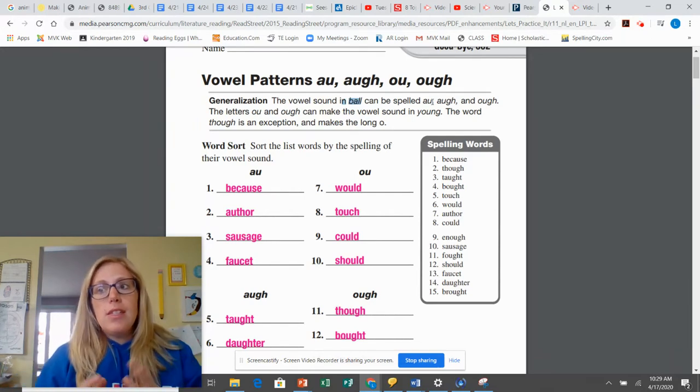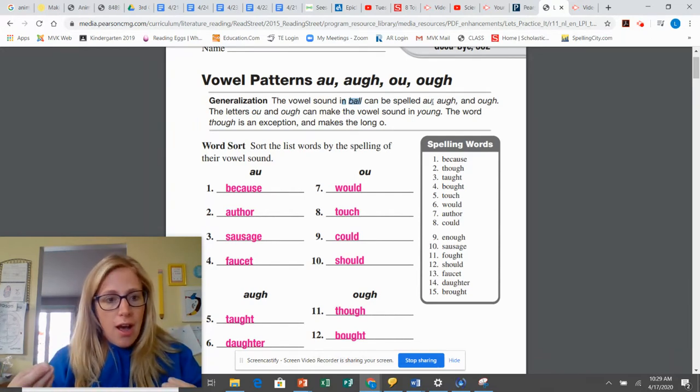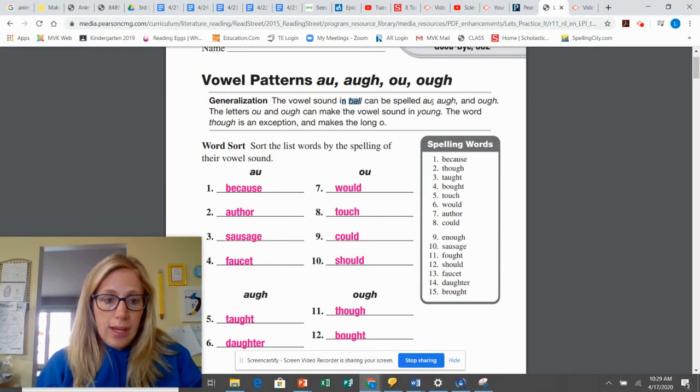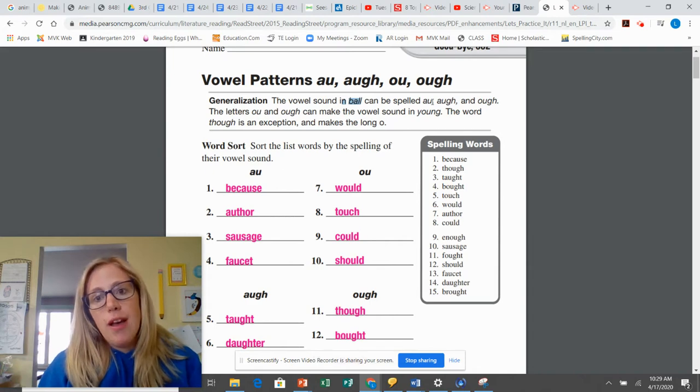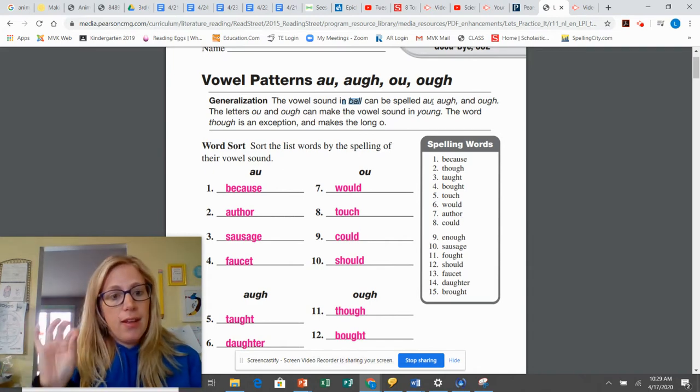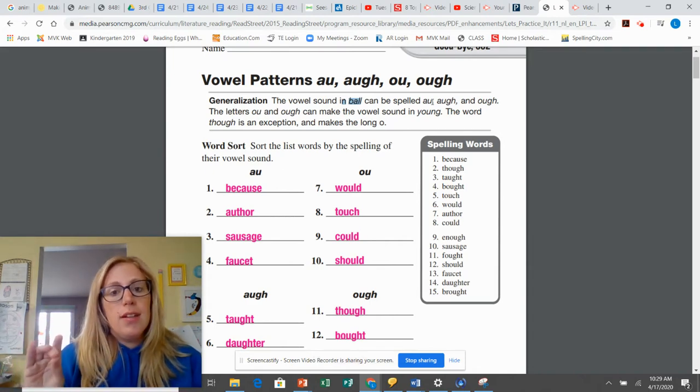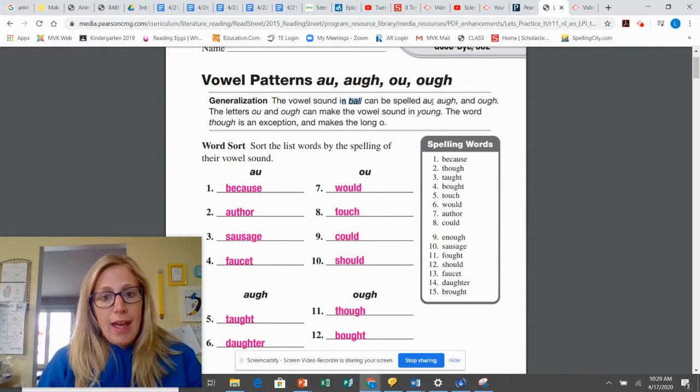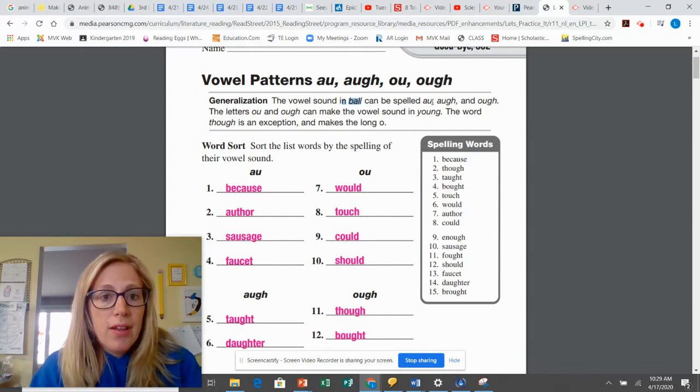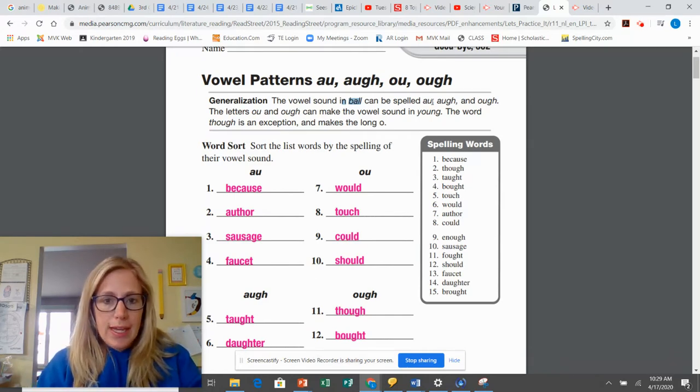So you can spell that aw sound using those three different ways. The letters OU and OUGH can make the vowel sound like in the word young, yuh, or tapping out, uh. So that's another sound we have. And then there's one exception, though it's making the long O sound.